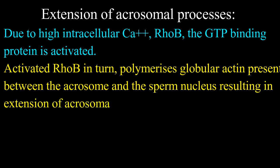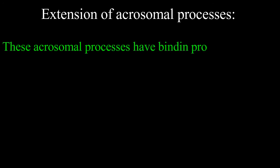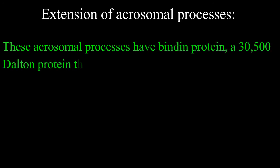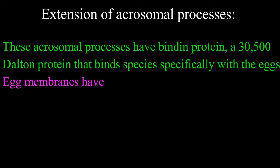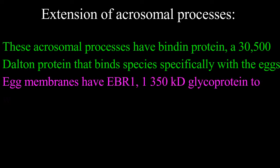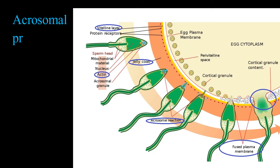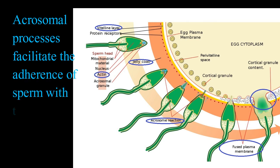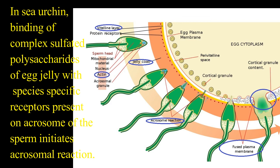This results in extension of acrosomal processes. These acrosomal processes have a binding protein — a 30,500 dalton protein — that binds species-specifically with the eggs. Egg membranes have EBR1, a 350 kilodalton glycoprotein, to which the binding protein from acrosomal processes binds. Acrosomal processes facilitate the adherence of sperm with the vitelline envelope of the egg.